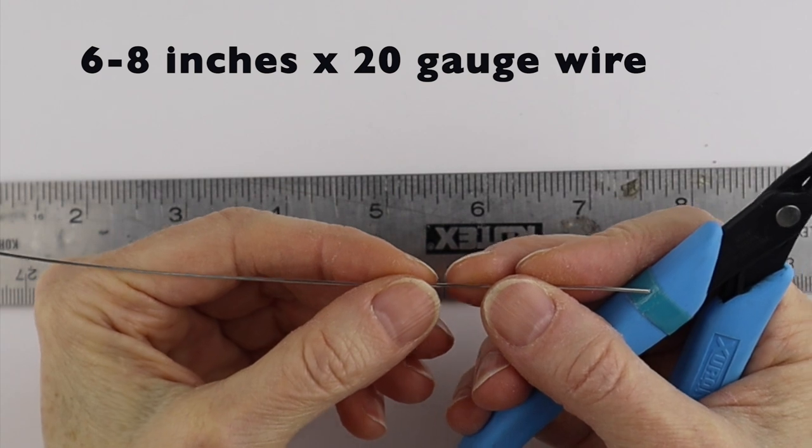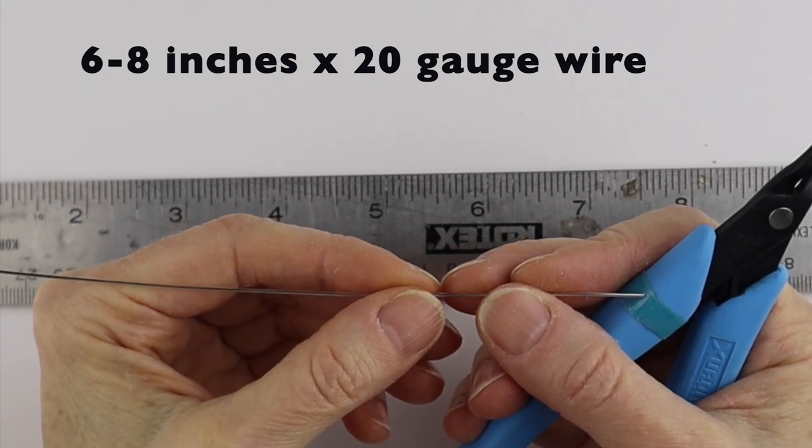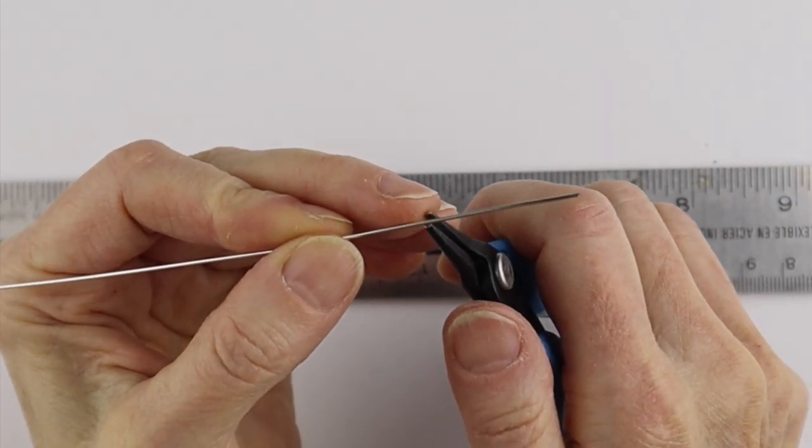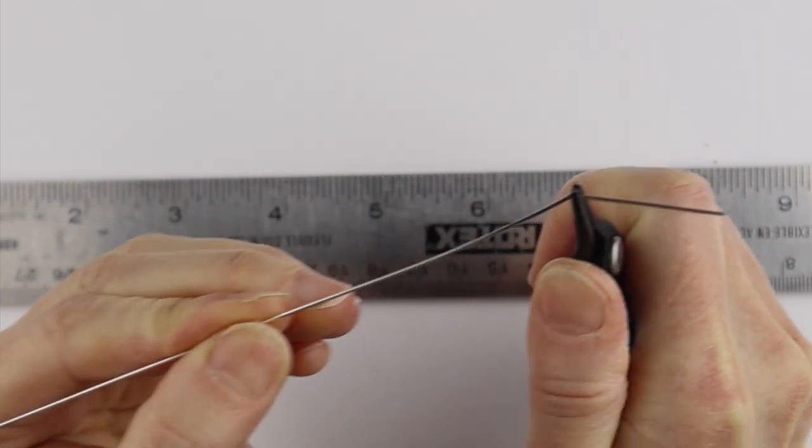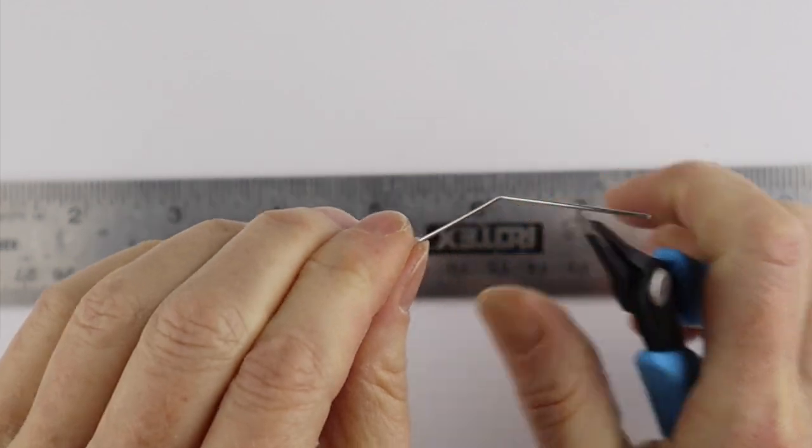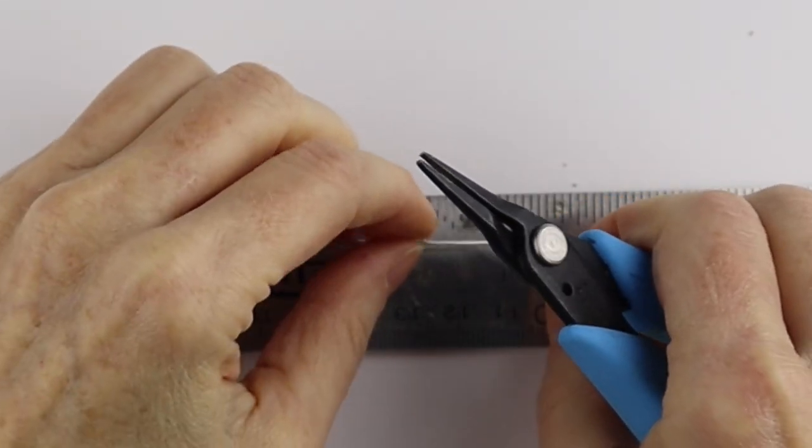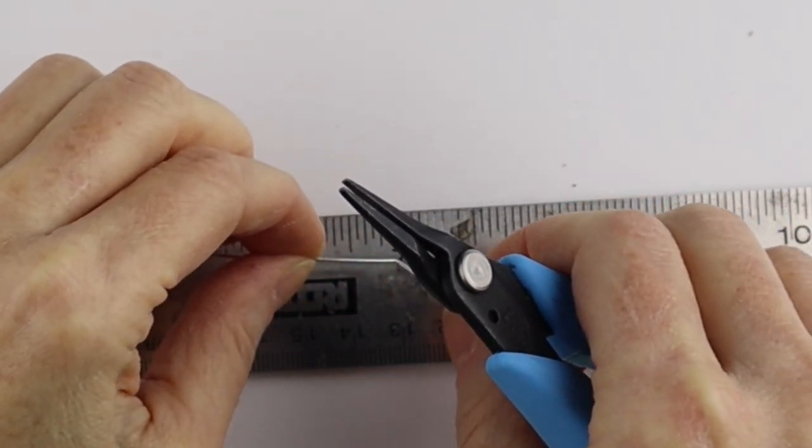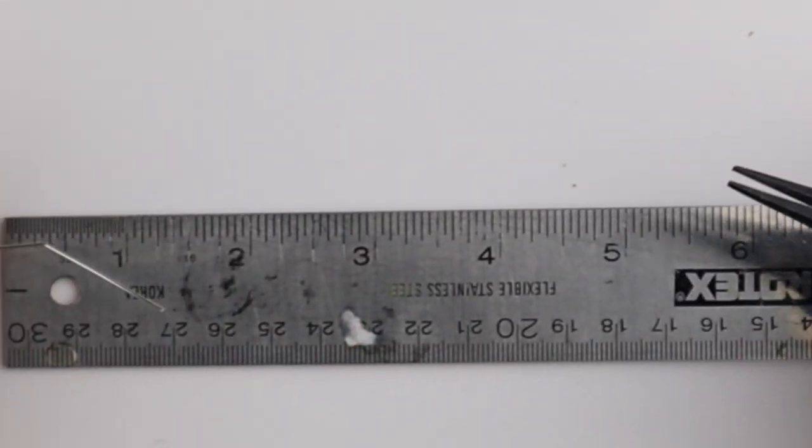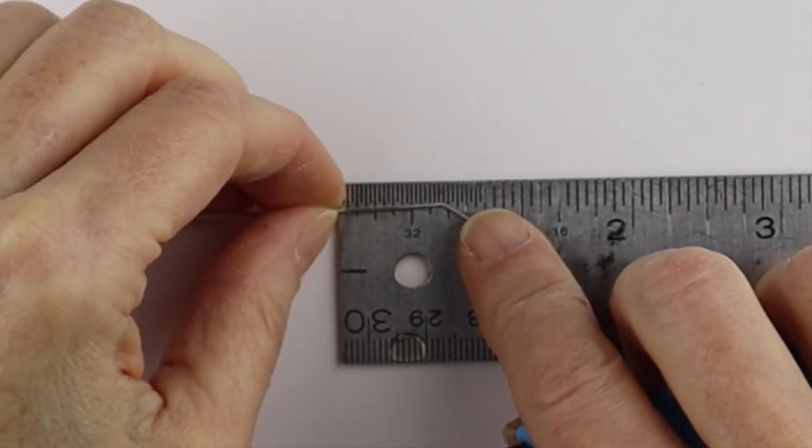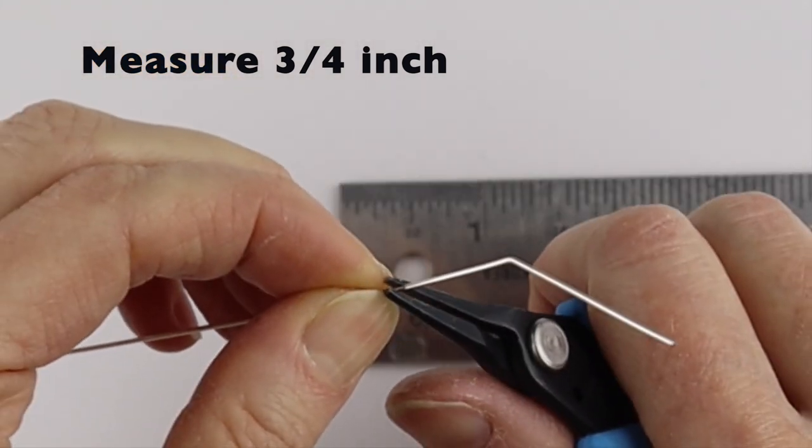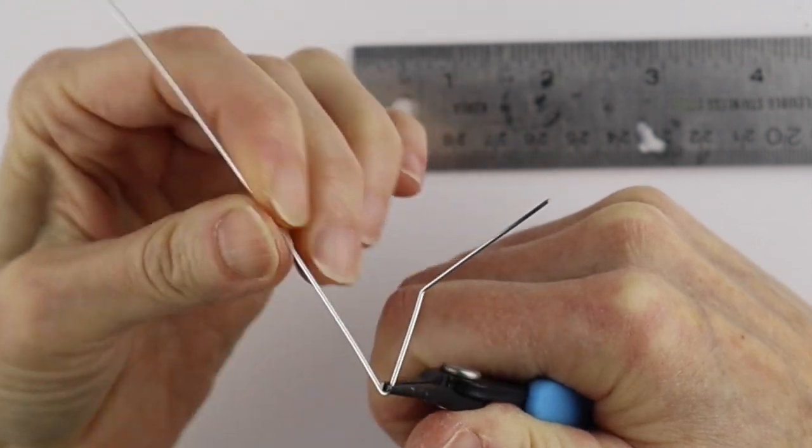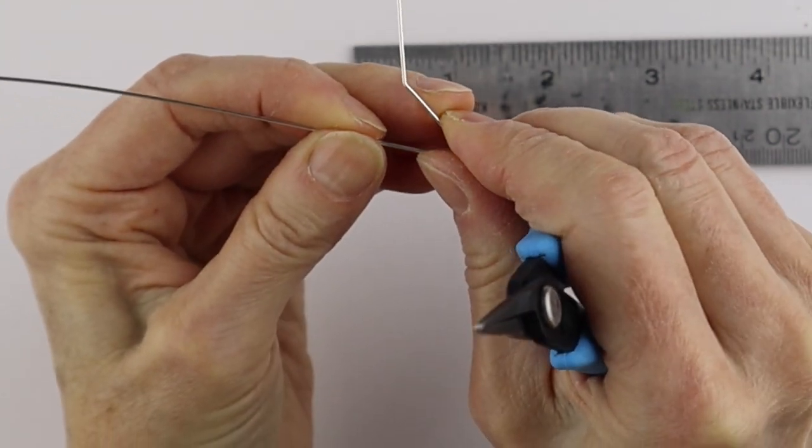We'll start with a 6 to 8 inch piece of wire and what we want to do is just bend it about at an inch, a little bit of an angle. And then we want to measure the length of one of the sides of the star.